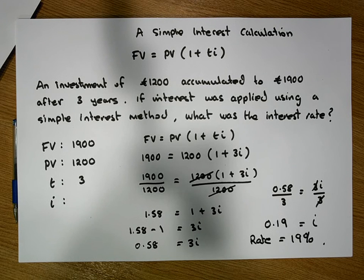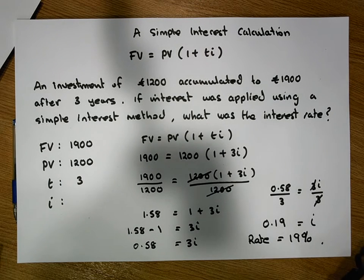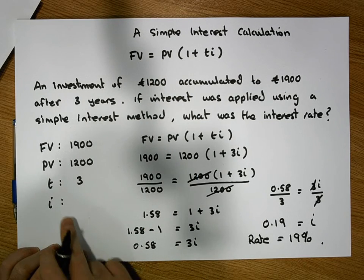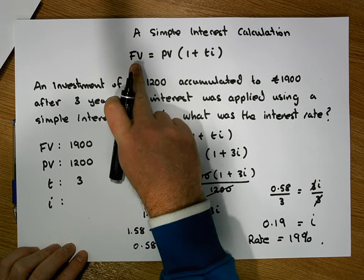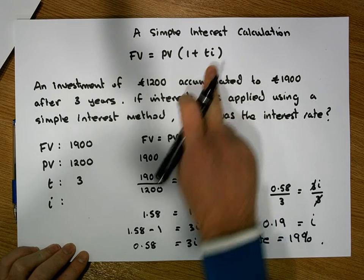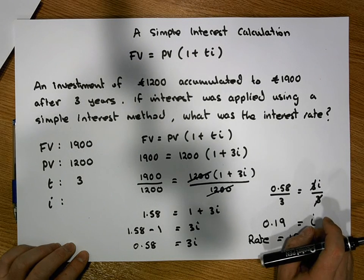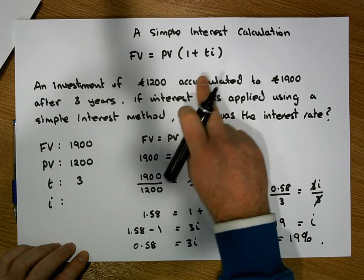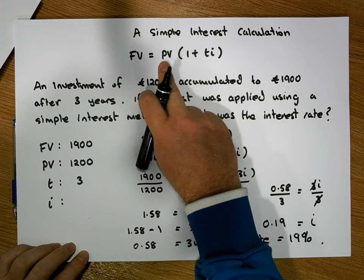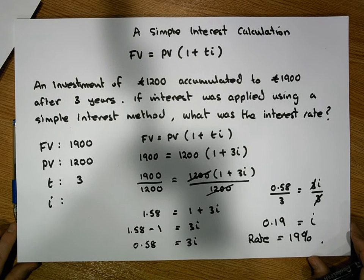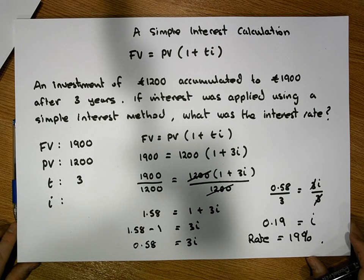That was a little bit faster, but you can pause the video at different moments to rationalise and understand the calculation. There are many different ways we can frame this particular formula. In this example, the unknown was the interest rate. You could also be given the future value, the principal value, and the interest rate, and be asked how long the investment was made for — or be asked to find the principal value. There are many different ways to use this formula from a general calculation perspective. This was Jonathan Lambert with the Mathematics Development and Support Service at the National College of Ireland, and I hope that video was helpful.